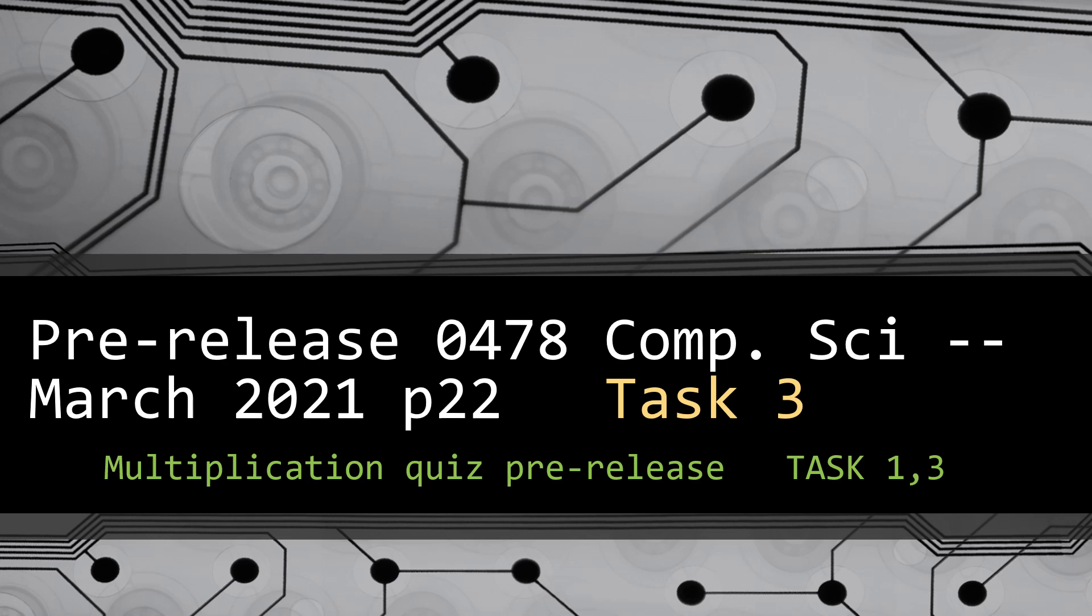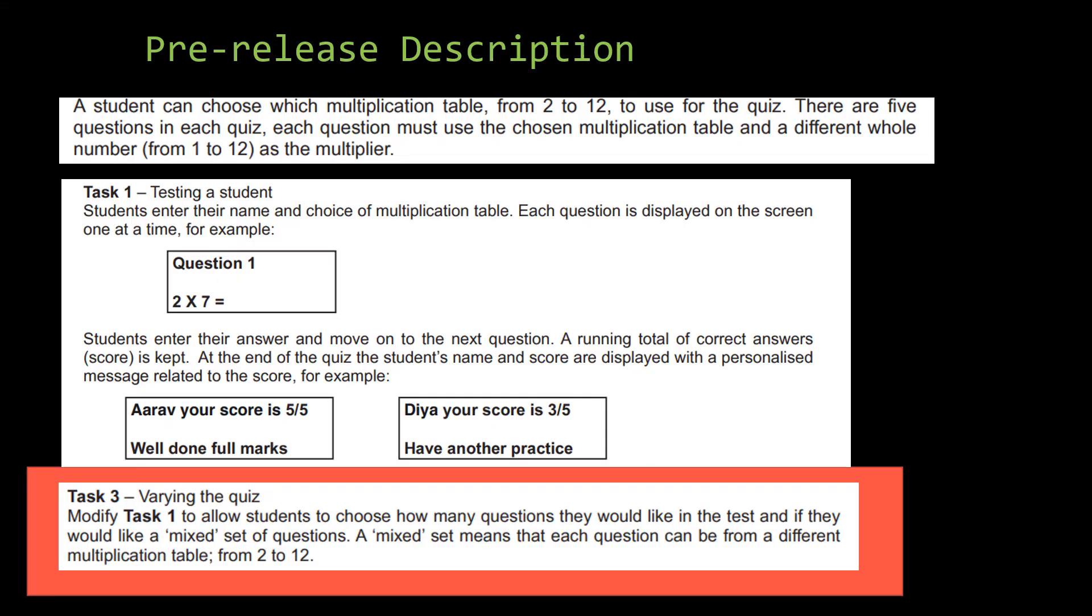Hi, this is Salma Banoan and welcome to the pre-release material for the March 2021 paper 2-2 and this is task 3. So reading from the pre-release description task 3, varying the quiz, modify task 1 to allow students to choose how many questions they would like in the test and if they would like a mixed set of questions. A mixed set means that each question can be from a different multiplication, for example from 2 to 12.